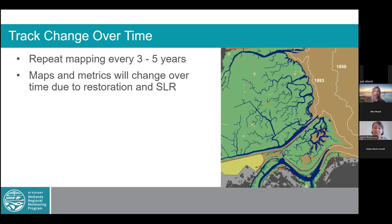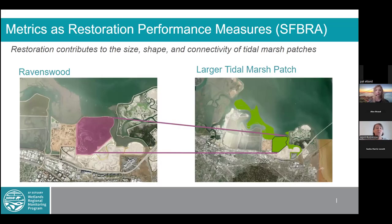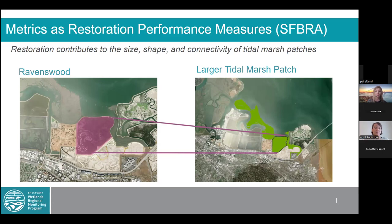These are metrics we can look at at multiple scales. This is an example of the way the WRMP is planning to look at some of these metrics in its nested hierarchy — all the way from looking at the whole Bay through sub-embayments all the way down to the analysis unit and project site level. The Restoration Authority is using the map to analyze performance metrics to look at how the sites they are funding contribute to overall marsh patches, making them larger, more connected, and more able to support marsh wildlife.